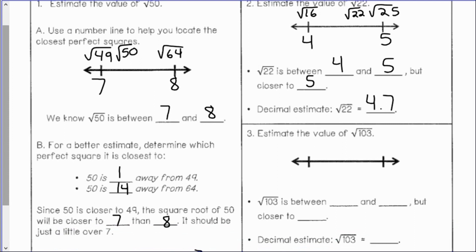Number 3: if I want to estimate the value of the square root of 103, I know it is in between the square root of 100 and the square root of 121. The square root of 100 is 10 and the square root of 121 is 11, so the square root of 103 is between 10 and 11.